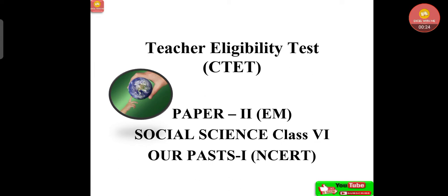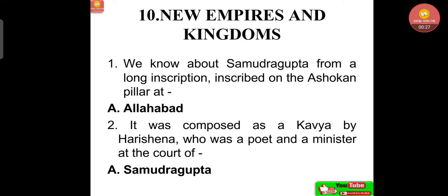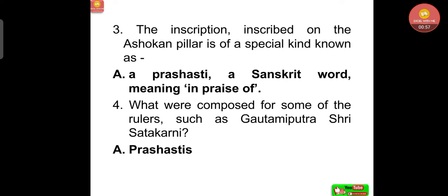From NCERT Chapter 10, New Empires and Kingdoms, let's start with Practice Question Number 1. We know about Samudragupta from a long inscription inscribed on the Ashokan Pillar — it is at Allahabad. It was composed as a kavya by Harishena, who was a poet and a minister at the court of Samudragupta. This inscription is of a special kind known as a prashasti, a Sanskrit word meaning 'in praise of.'